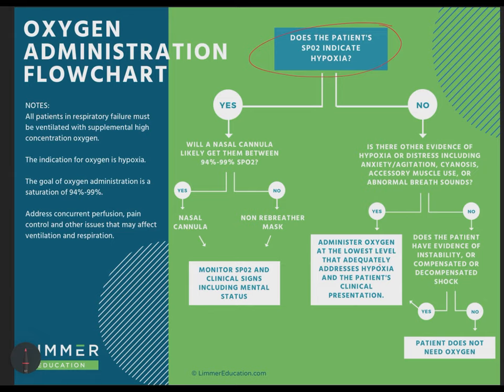When do we make our oxygen determinations in EMS? We make them early in the call, ultimately in that primary assessment phase. In reality, you see a patient, you talk to them, you get a good look at them, and then we put the pulse ox on their finger. We get the pulse and the oxygen saturation. It doesn't replace clinical judgment, but it's part of our practice, and I don't think we should deny it.